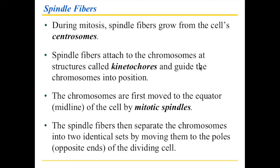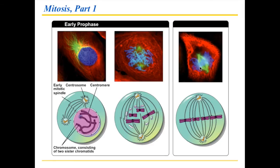Once the mitotic spindle is formed and all the chromosomes are lined up at the midline of the cell, the spindle fibers start to pull and separate the chromosomes — separating the sister chromatids — by moving them to the opposite ends of the dividing cell. This is a very dynamic process, and videos in the homework assignments and lab also show this.